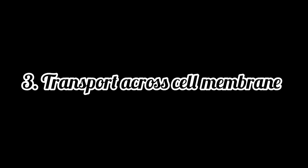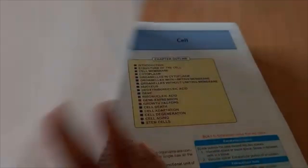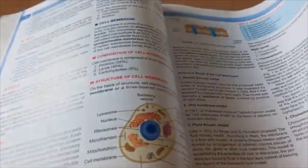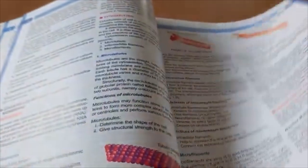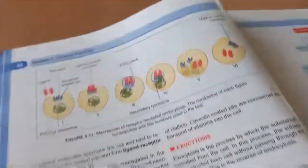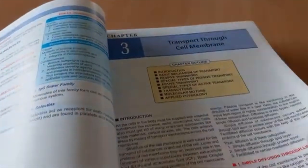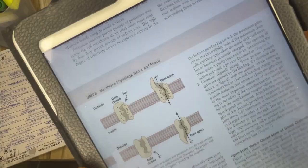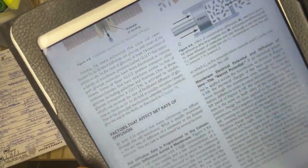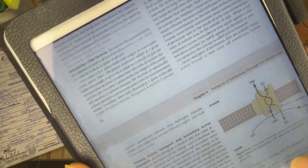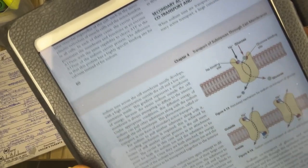Another high-yield and very important topic that is commonly repeated in most physiology exams is transport across the cell membrane. Transport across the cell membrane typically refers to the movement of substances such as ions, molecules, and proteins in and out of the cell. To do well in this topic, you would need to understand both active and passive transport mechanisms, how primary active transport differs from secondary active transport, how the sodium-potassium ATPase pump works in primary active transport, and the different transport mechanisms that fall under passive transport, including examples of substances that can diffuse through the lipid bilayer by simple diffusion or facilitated diffusion.